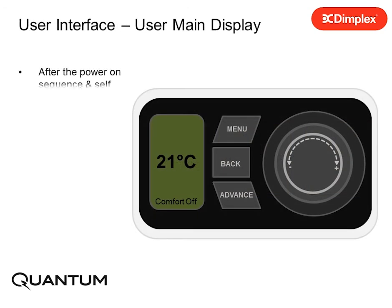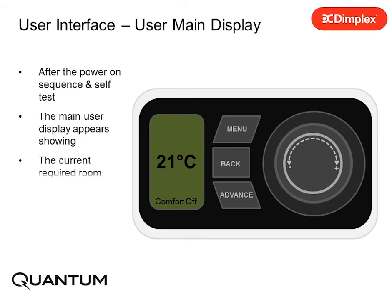After the power on sequence and self test have completed, the main user display appears showing the current required room temperature and the current comfort status. Comfort is off.